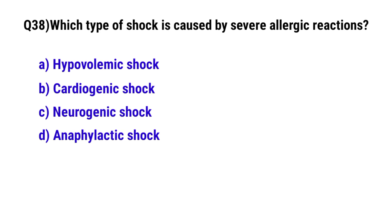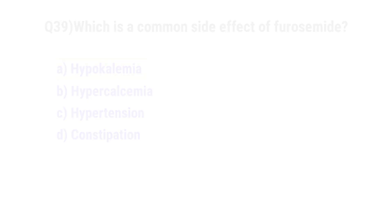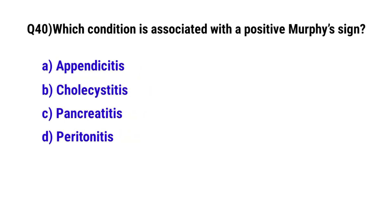Question number 38: Which type of shock is caused by severe allergic reaction? The correct option is D: Anaphylactic shock. Question number 39: Which is a common side effect of furosemide? The correct option is A: Hypokalemia. Question number 40: Which condition is associated with a positive Homans' sign? The correct option is B: Deep vein thrombosis.